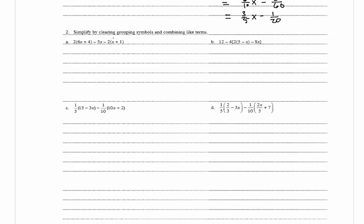We also distribute the negative 2 to (x plus 1). So we get 2 times 6x equals 12x, plus 2 times 4 equals 8, minus 5x, then negative 2 times x equals negative 2x and negative 2 times 1 equals negative 2. Combining like terms: 12x minus 5x minus 2x equals 5x, and 8 minus 2 equals 6. So the answer is 5x plus 6.